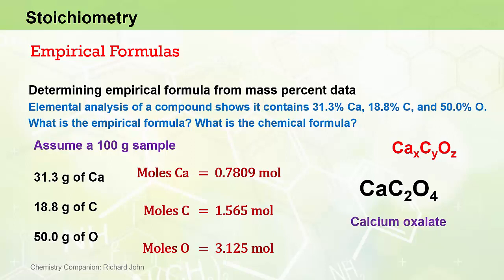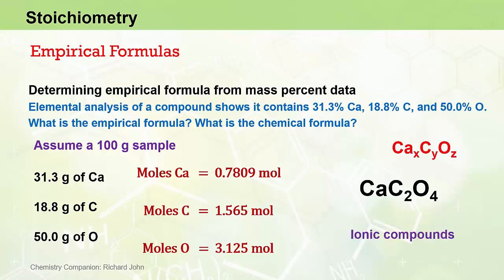This chemical formula represents the ionic compound calcium oxalate, with the Ca²⁺ calcium ion and the C2O4²⁻ oxalate ion. Since this is an ionic compound, the empirical formula and the chemical formula are identical. So CaC2O4 is not only the empirical formula, it's also the chemical formula.